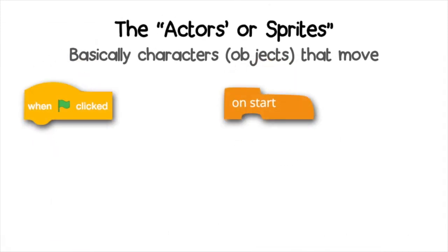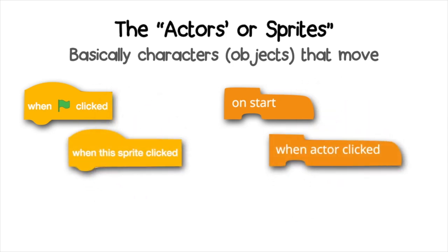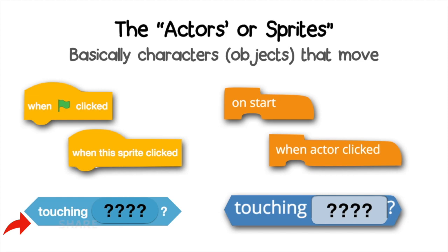How does the first actor or sprite behave? Does it start with a block or is it controlled by the player? Does it need to communicate with other sprites or actors to work properly?